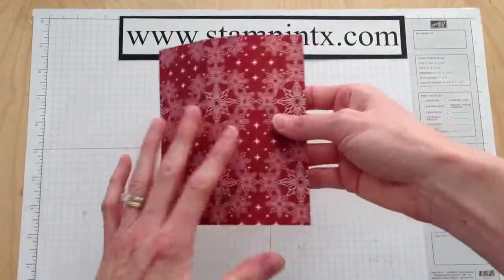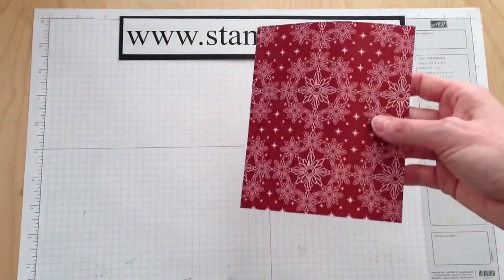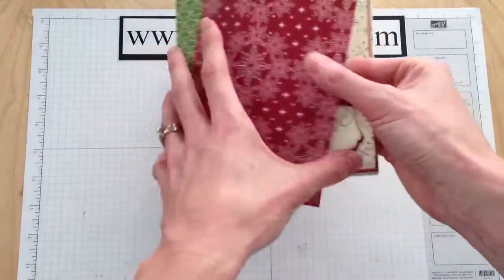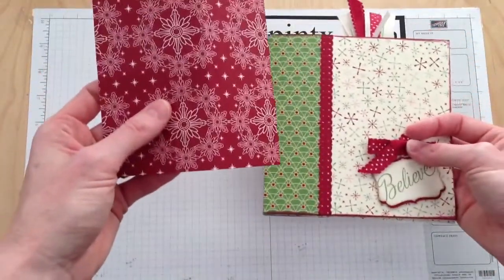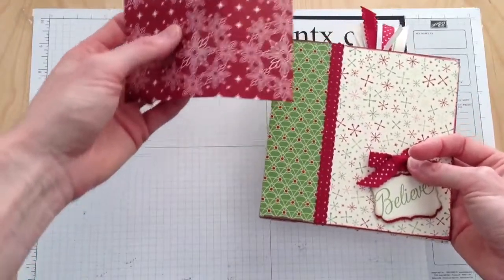This piece is a 5 by 6 piece, and this is going to form our spine. It's going to wrap around just like this. So you'll need one 5 by 6 for the spine.